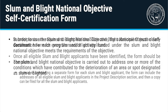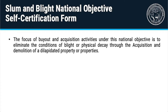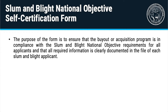In order to use the Slum and Blight National Objective, the sub-recipient must clearly document how each program and/or activity funded under the Slum and Blight National Objective meets the requirements of the Objective. The Slum and Blight National Objective is carried out to address conditions which have contributed to the deterioration of an area or spot designated as slum or blighted. The purpose of this form is to ensure the buyout or acquisition program is in compliance with the requirements and that all required information is clearly documented in the file of each applicant.